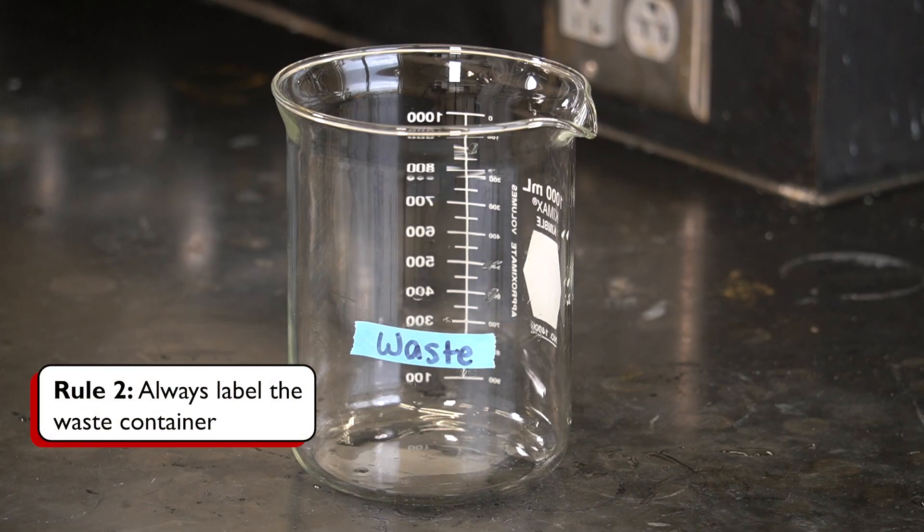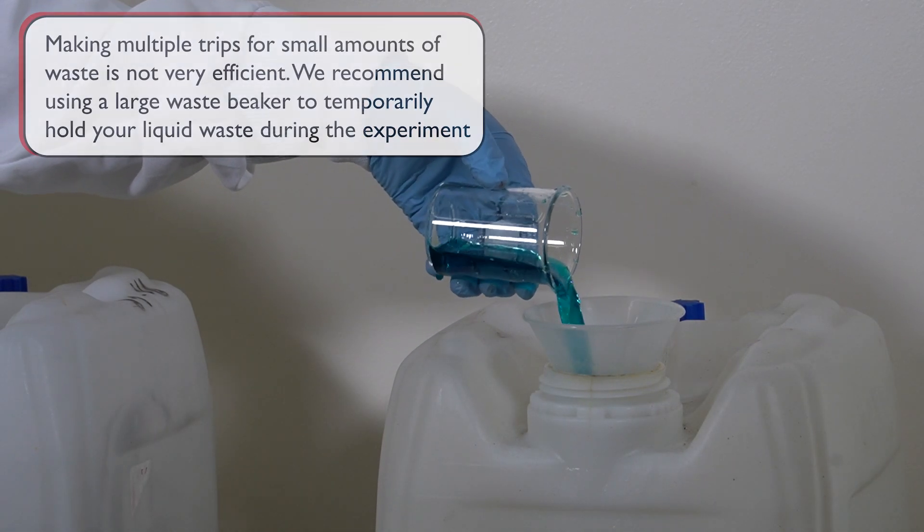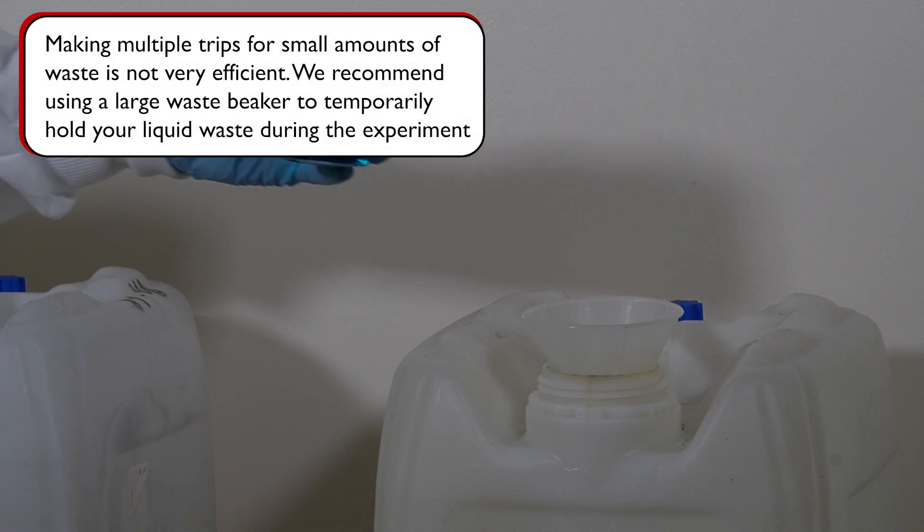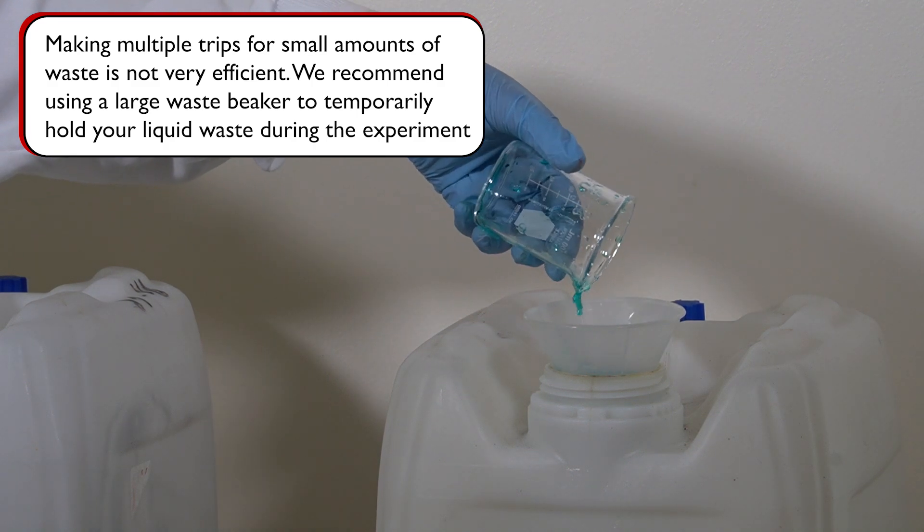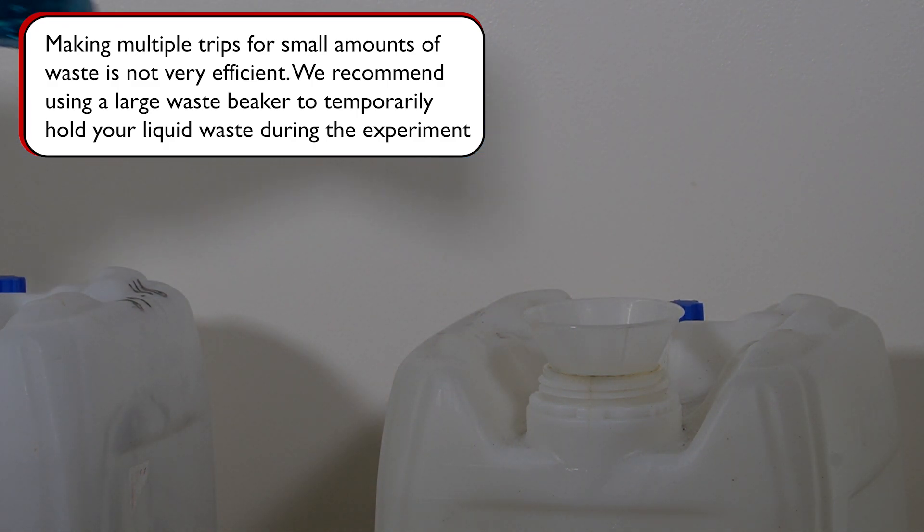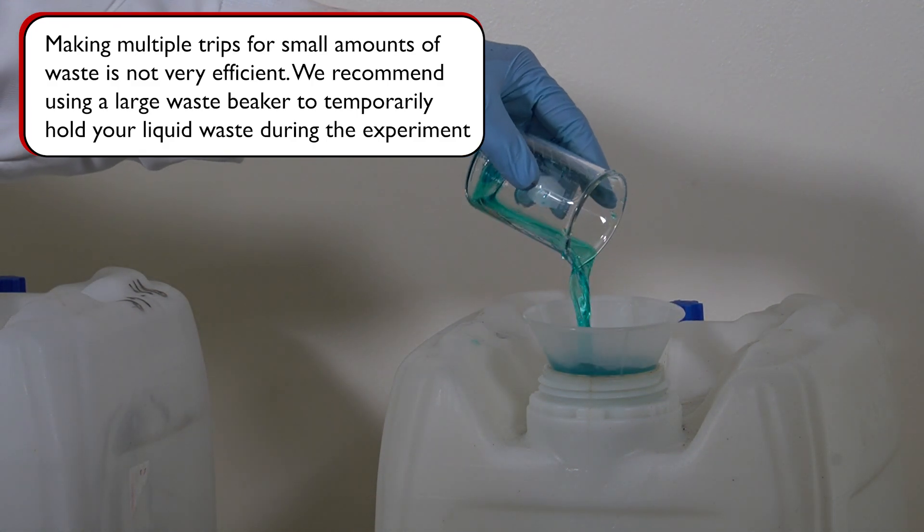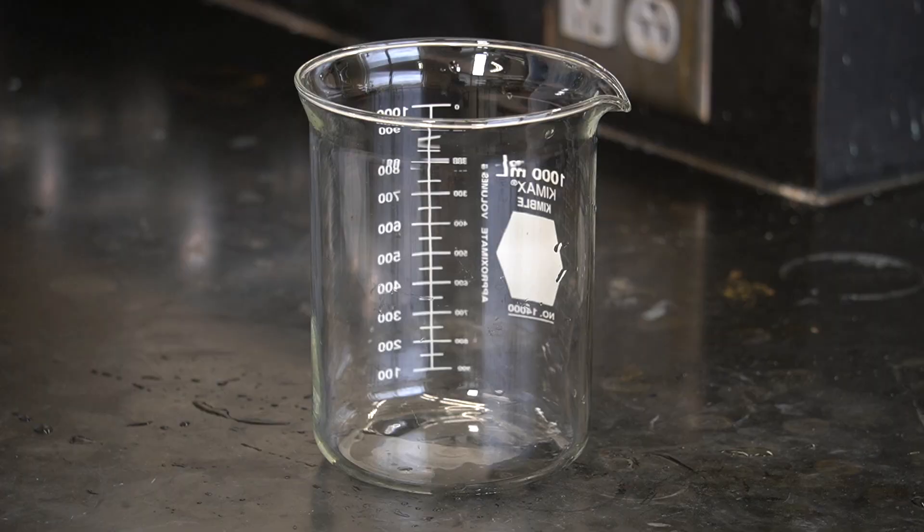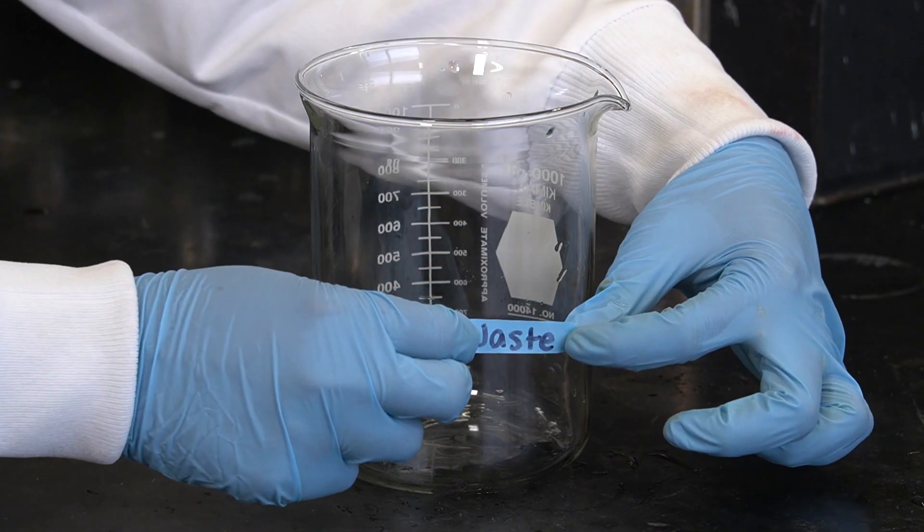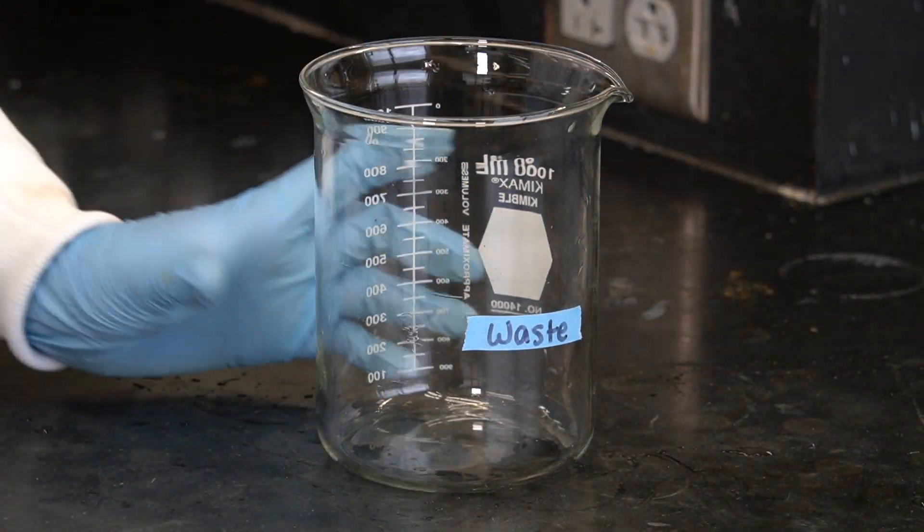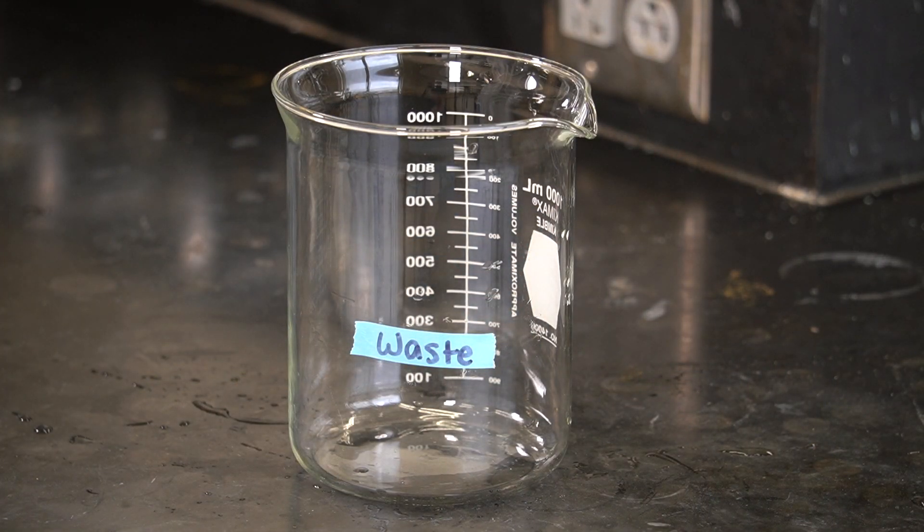Rule number two: always label the waste container. During the experiment, it may be more convenient to use a beaker as a temporary waste container instead of making frequent trips to the waste bin every time a small amount of waste is generated. To do so, we can choose a large glass beaker and label it as the waste beaker. If it is used for general aqueous waste, a waste label is sufficient.